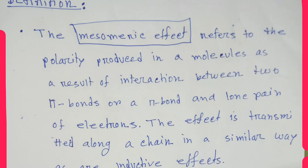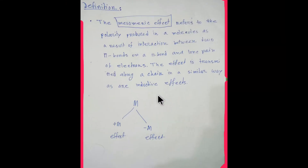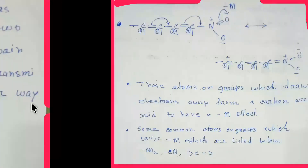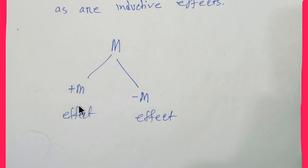The mesomeric effect refers to the polarity produced in a molecule as a result of interaction between two pi bonds, or a pi bond and a lone pair of electrons. The effect is transmitted along a chain in a similar way as the inductive effect. There are two kinds: positive mesomeric effect and negative mesomeric effect.